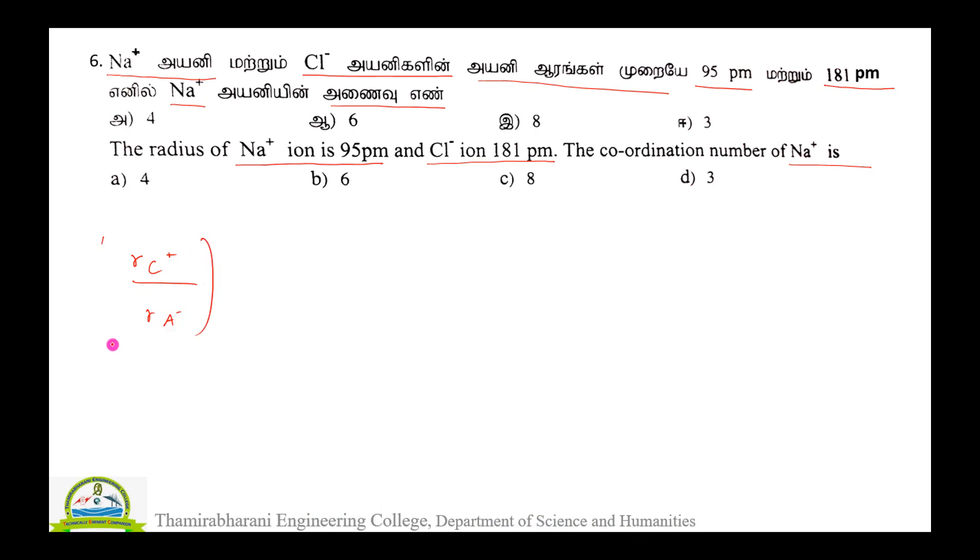So cation by anion, put the calculation. Cation is 95, Na+ is 95 picometer divided by anion is 181 picometer. So units cancel.